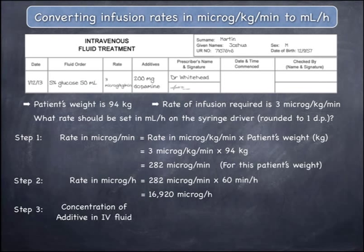In the third step, calculate the concentration of the 200 milligrams of dopamine additive in the 50 mils of 5% glucose. This is equal to the quantity of dopamine — 200 milligrams as read from the order — divided by the volume of the IV fluid, which is 50 mils. This gives 4 milligrams per mil.